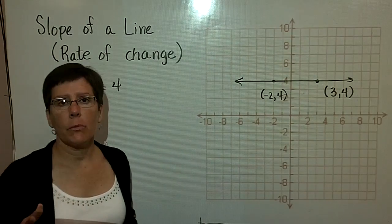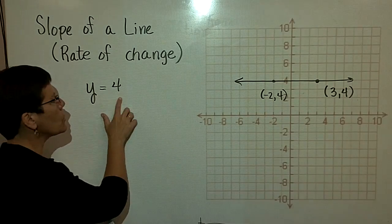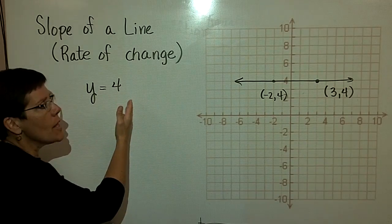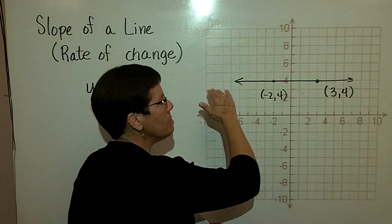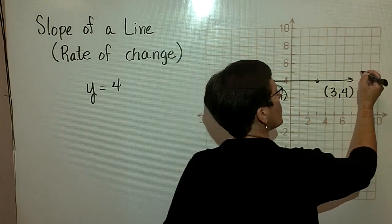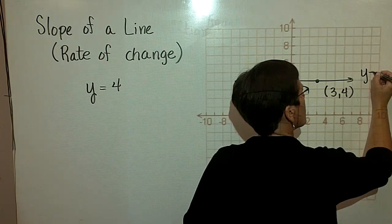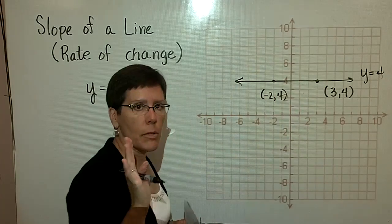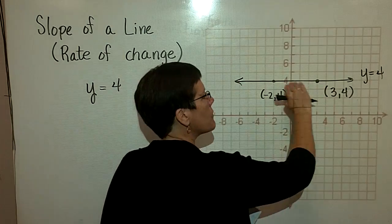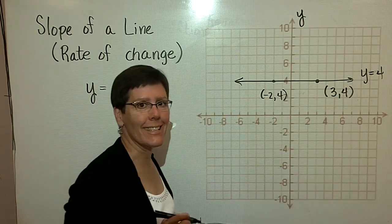In our previous study, we recognized that when we have y equals a value, that's a horizontal line. Here's the graph of the equation where y is always equal to 4. Remind yourself that the graph of that line is perpendicular to its own axis.